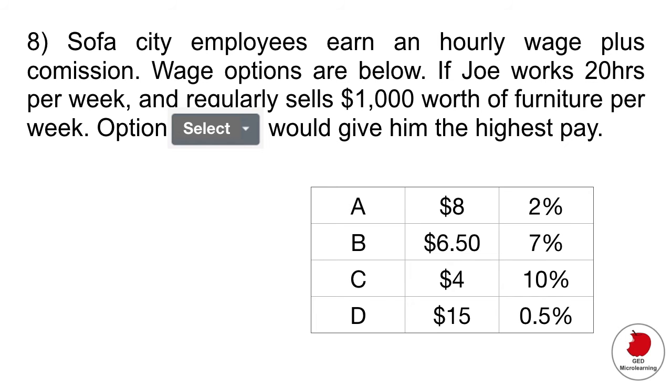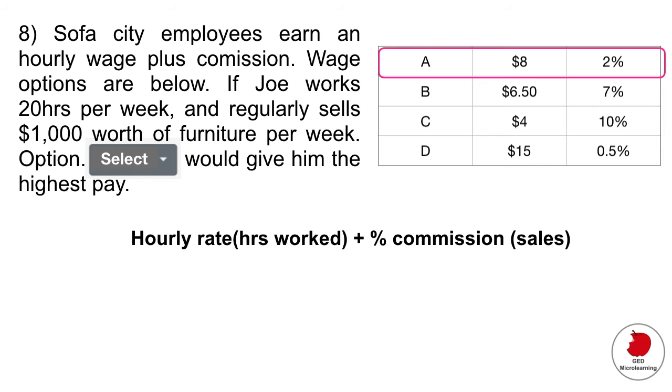This next question is one of these drop down menu questions, where you're asked to drop down the menu and select the correct answer. It says sofa city employees earn an hourly wage plus commission, wage options are below. If Joe works 20 hours per week and regularly sells $1,000 worth of furniture per week, which option would give him the highest pay?